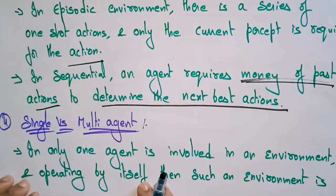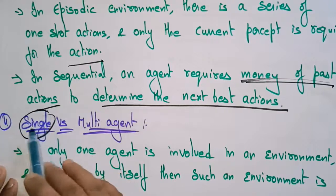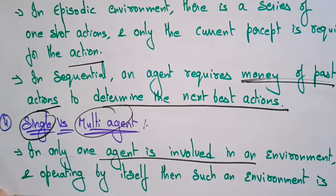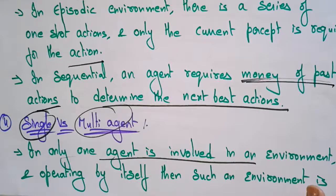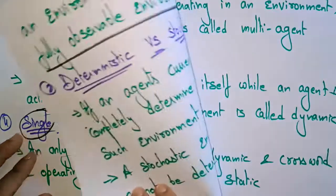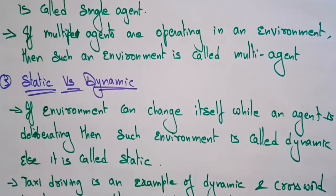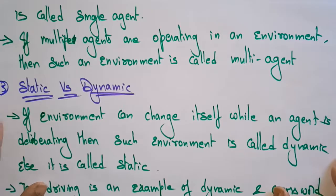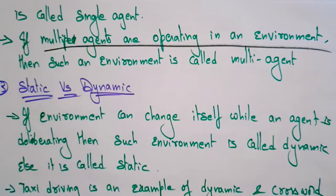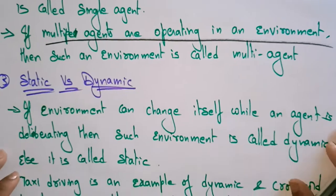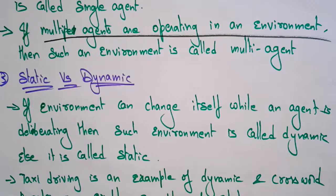Single versus multi-agent: if only one agent is involved in an environment and operating by itself, then such an environment is called a single-agent environment. Multi-agent is just the opposite — if multiple agents are operating in an environment, then such an environment is called multi-agent. These are the features of the environment in the view of the agent, because the agent is surrounded by the environment.